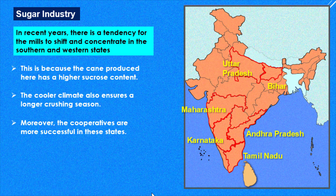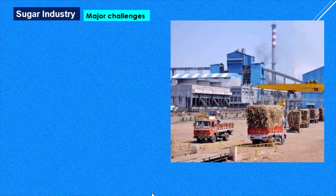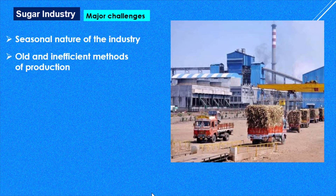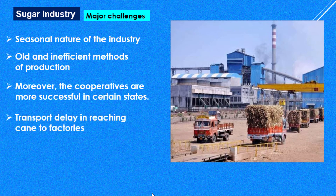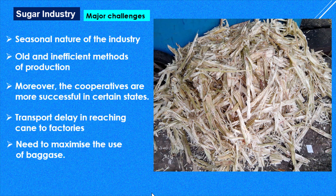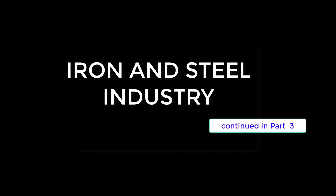Despite this trend, Uttar Pradesh still ranks first in sugar production, as southern parts of India have experienced drought conditions in recent years. The major challenges of the sugar industry are: its seasonal nature — mills are closed during the rainy season; old and inefficient methods of production with outdated machinery; transport delays in reaching sugarcane to factories, which reduces sugar yield; and the need to maximize use of bagasse, which is currently dumped as waste but can be used for making paper or as fuel.